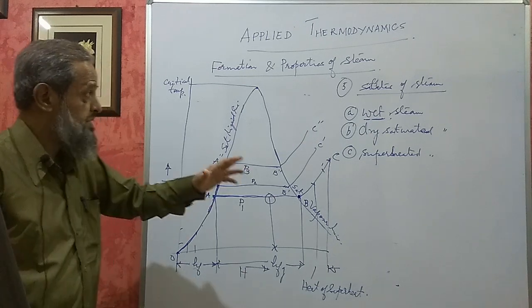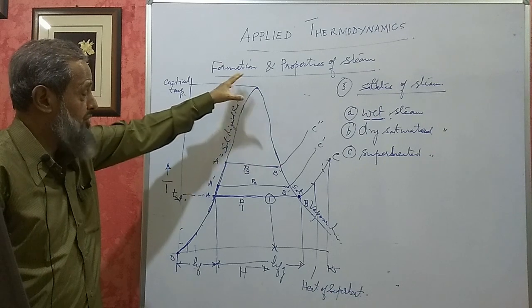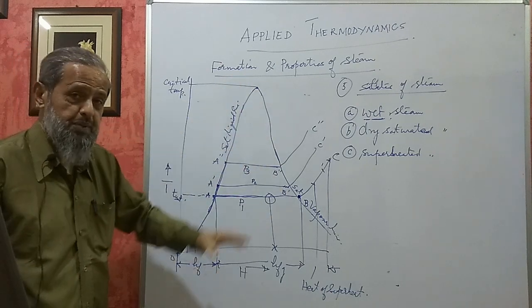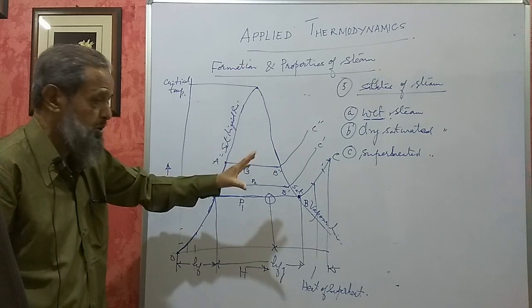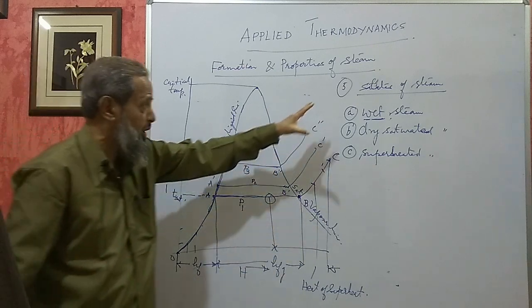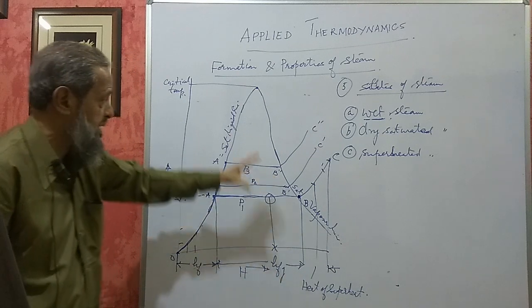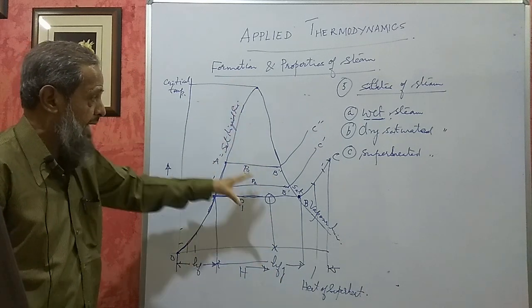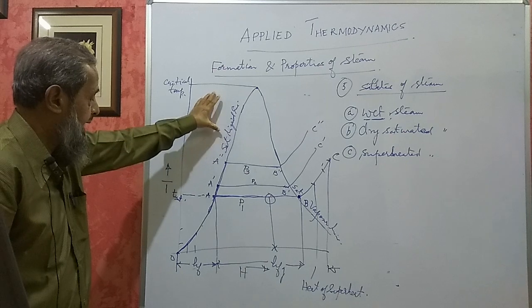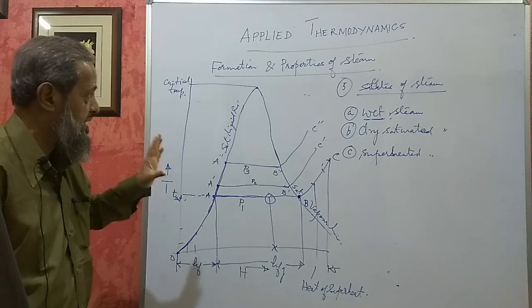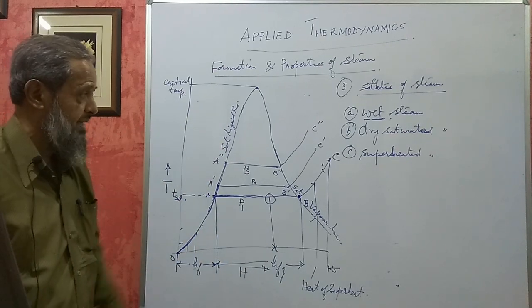In the previous video, I had explained the formation and properties of steam. We had come to the fifth point, that is the different states of steam: wet steam, dry steam and superheated steam. I had told you the differences between them and explained the formation of steam with the help of a T-H diagram.